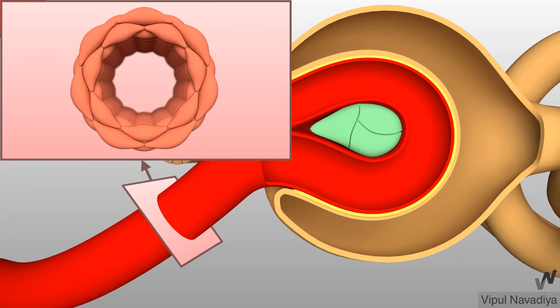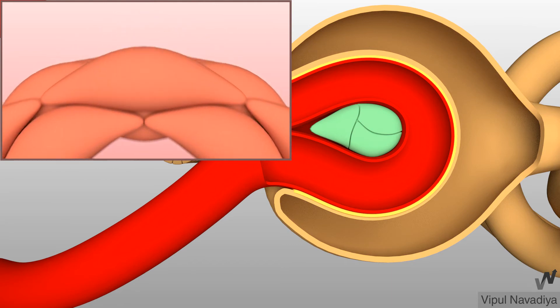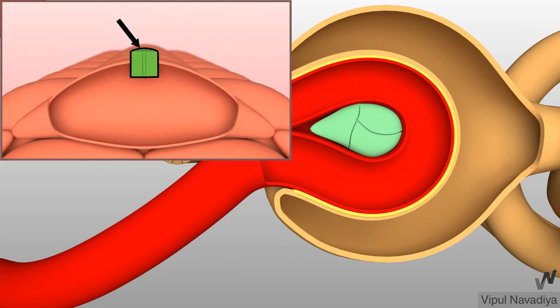This is the cut section of arteriole and these are the smooth muscle cells. They have stretch-sensitive cation channels on the membrane. Say this channel is closed at present.